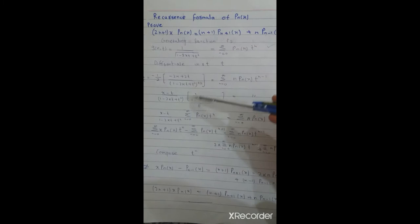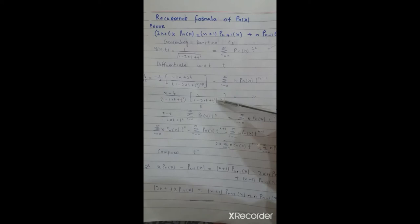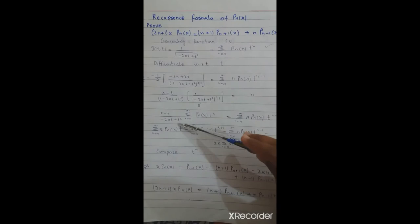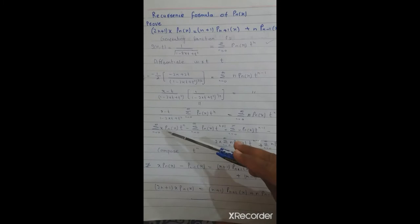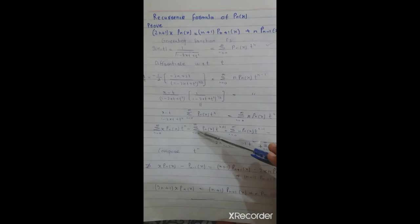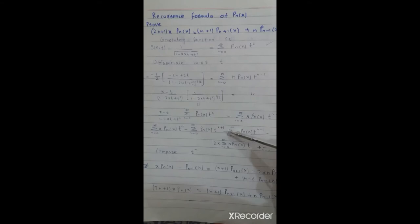This term can be written in another form. This term is equal to summation Pn(x) times t to the power n. The right-hand side, after multiplying, gives summation x·Pn(x)·tⁿ minus summation Pn(x)·tⁿ⁺¹.